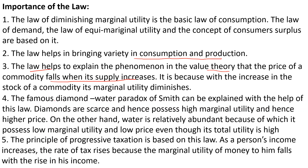The fourth importance is the famous diamond-water paradox of Adam Smith, which can be explained with this law. Diamonds are scarce and hence possess high marginal utility and a higher price. On the other hand, water is relatively abundant, so it possesses low marginal utility and a low price, even though its total utility is high. Fifth, the principle of progressive taxation is based on this law — as a person's income increases, the rate of tax rises because the marginal utility of money to him falls with the rise in income.